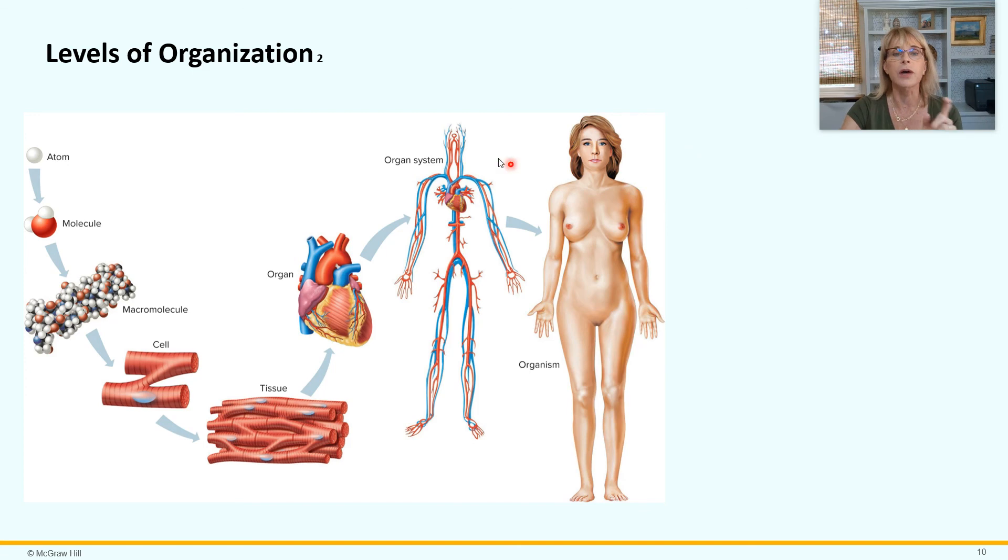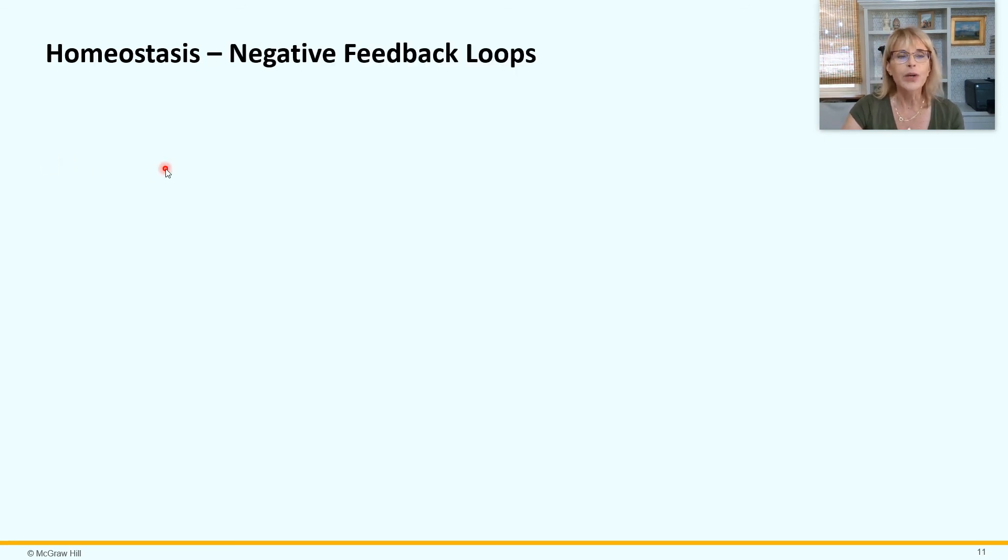Starting at the top, organisms get divided up into organ systems like the cardiovascular system, nervous system, respiratory system. Inside of organ systems there are organs like the heart, the brain, the lung, the kidney. Organs are made out of tissues. Tissues are made out of cells. Cells are made out of macromolecules, which are made out of molecules, which are made out of atoms. All right? So we will start here at the beginning of our next lecture.